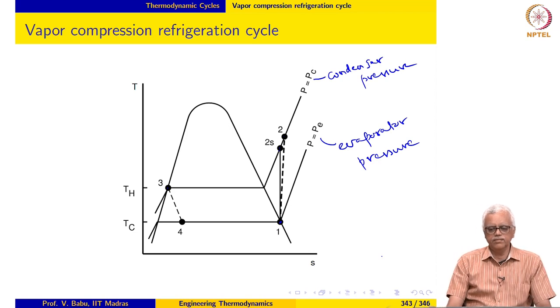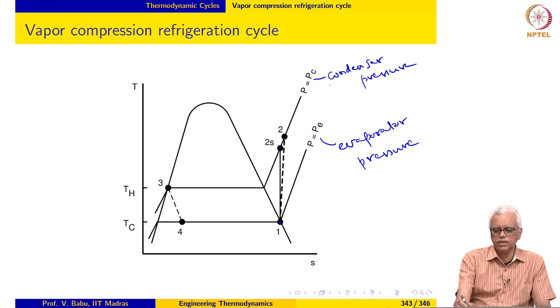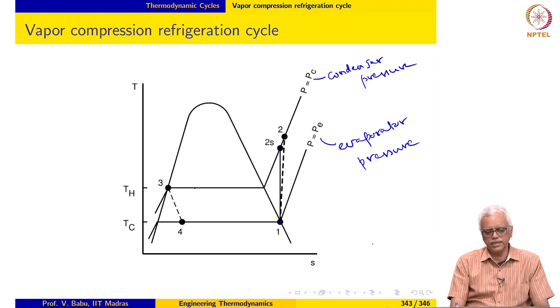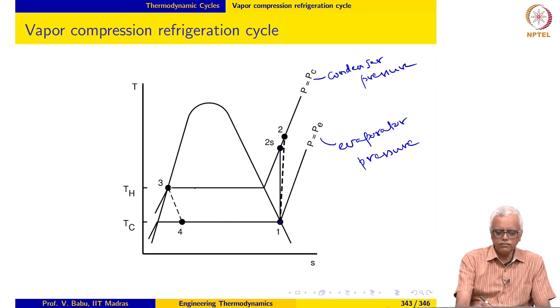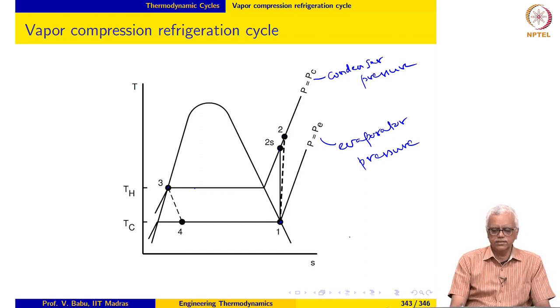In the case of the vapor compression cycle, the saturation temperature corresponding to the condenser pressure is taken to be TH. So, the refrigerant leaves the condenser as a saturated liquid.